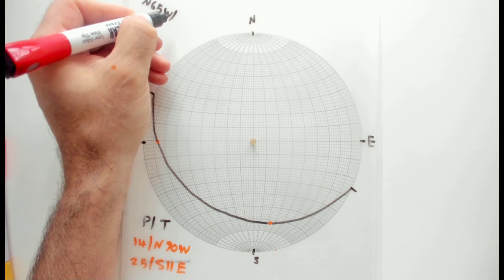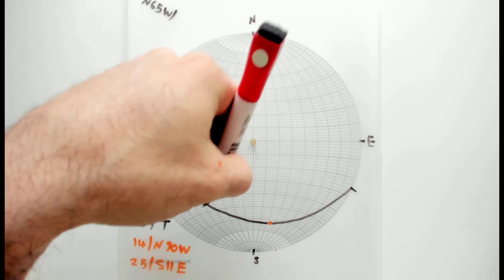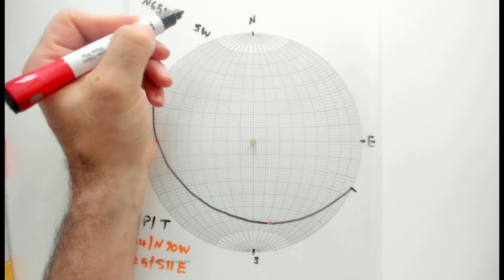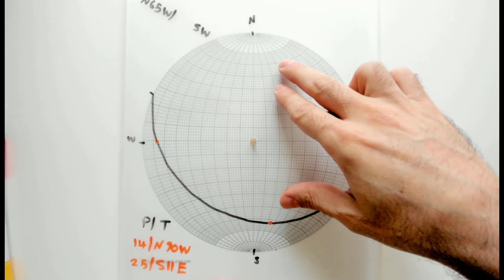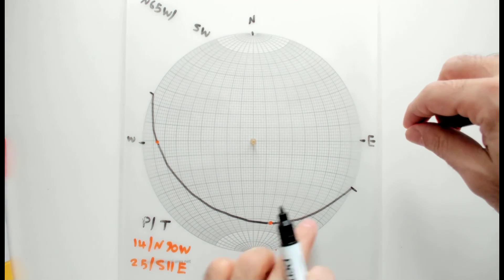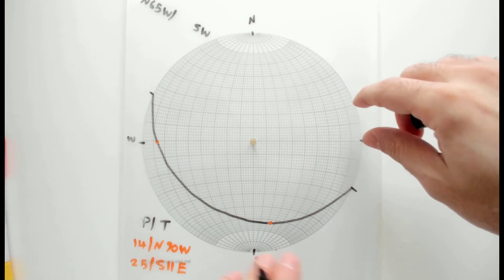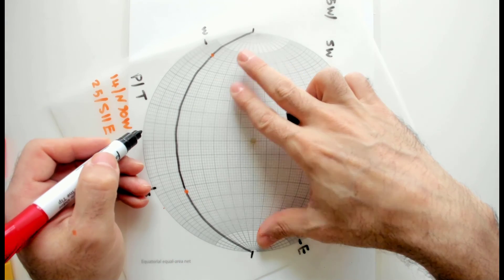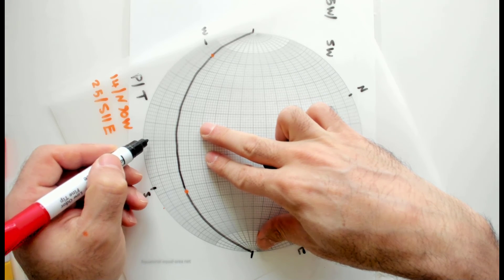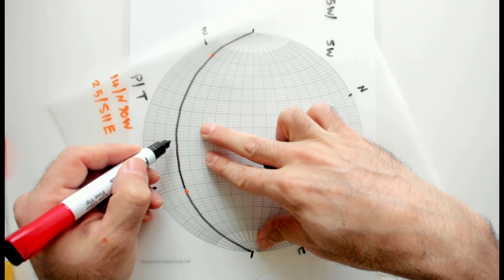Let's write it there. Let's place the plane along the great circle, then we are able to count the dip. The angle is 10, 20, 30. So you just write here 30 degrees. This is the solution.